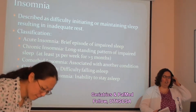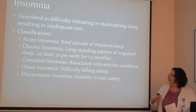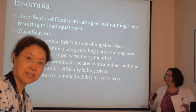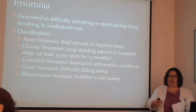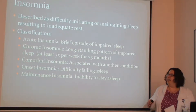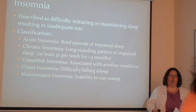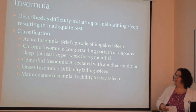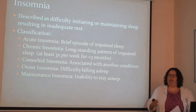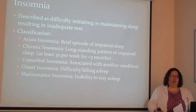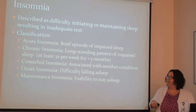Acute insomnia usually resolves spontaneously once the stressor is gone. For chronic insomnia, this is more long-standing. To qualify, you have to have at least three nights per week of impaired sleep over a course of more than three months, and this insomnia must not be related to another underlying disorder. That brings me to comorbid insomnia — difficulty sleeping because of another condition, whether psychiatric, medical, or something you're doing to your body.